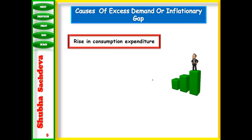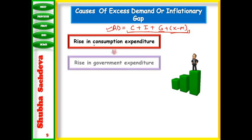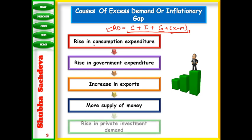What are the causes of the inflationary gap? Think about the components of aggregate demand: C + I + G + (X − M), covering the household sector, producer sector, government sector, and rest of the world. When the expenditure of all four sectors increases — rise in consumption expenditure, rise in government expenditure, increase in exports, and rise in private investment — aggregate demand increases beyond aggregate supply, and this is the cause of excess demand.